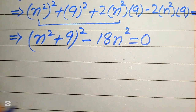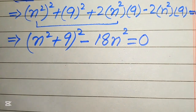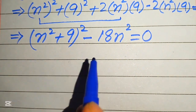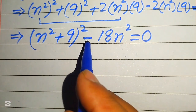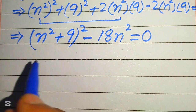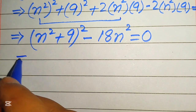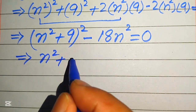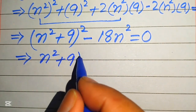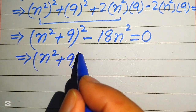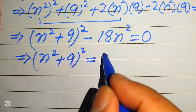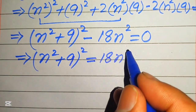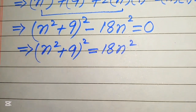Now, to solve for the values of n, we move the −18n² term to the right-hand side. It will be written as (n² + 9)² = 18n².